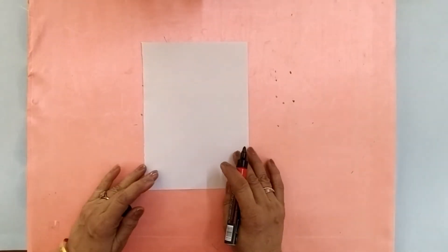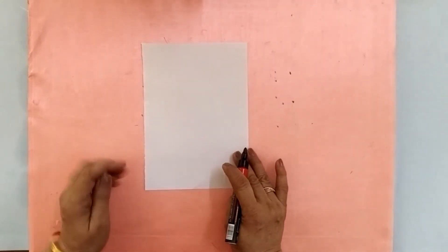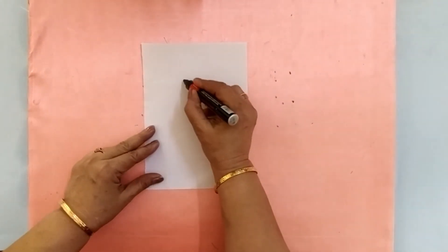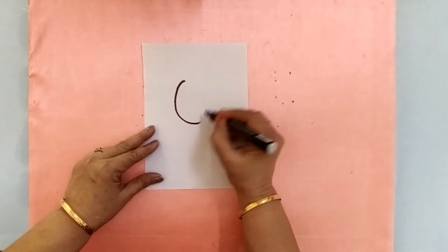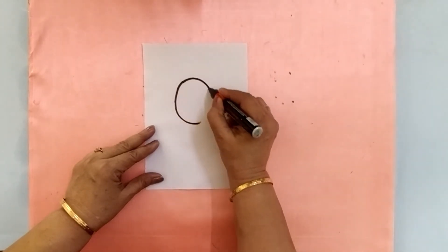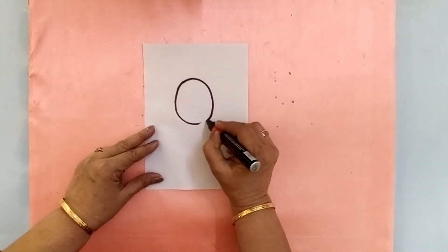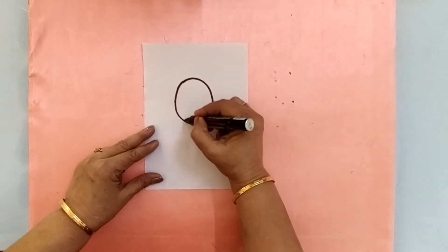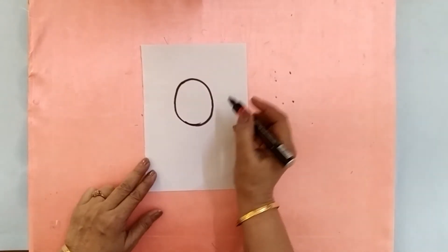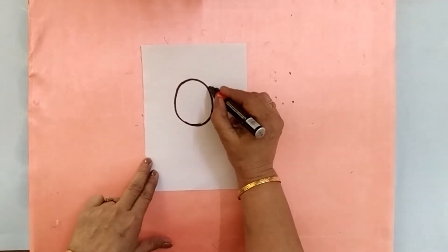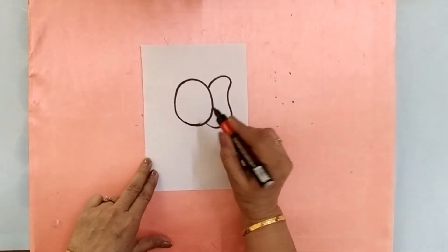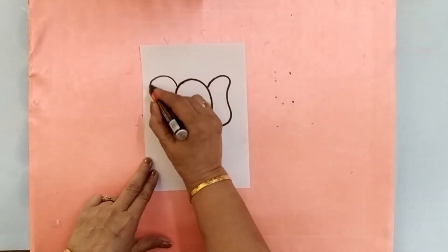Now let's practice writing number zero. This is number zero — let's trace it!